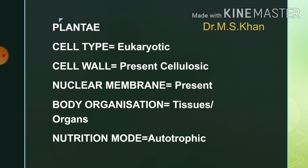The next kingdom is Plantae. In this, the cell type is eukaryotic. The cell wall is cellulosic. Nuclear membrane is present. Body organization is at the level of tissues and organs. Mode of nutrition is autotrophic — all plants are autotrophic. The cell wall is a distinctive feature that differentiates them from animals.